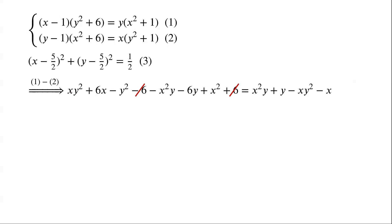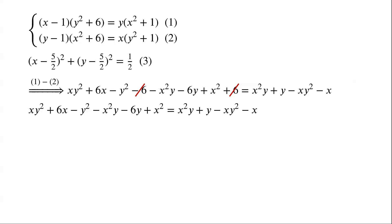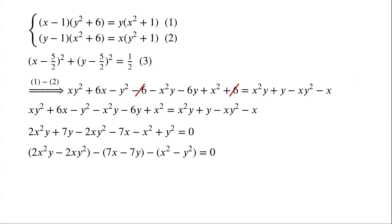The −6 and +6 on the left side of the equation cancel. So we can now write: XY² + 6X − Y² − X²Y − 6Y + X² = X²Y + Y − XY² − X. Collecting like terms, we have: 2X²Y + 7Y − 2XY² − 7X − X² + Y² = 0. Rearranging, we can write: 2X²Y − 2XY² − 7X − 7Y − X² − Y² = 0.